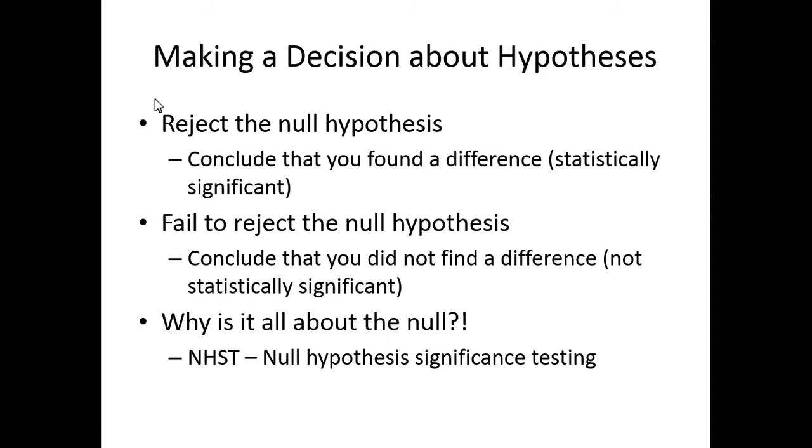Now with these hypotheses, sometimes you might predict a direction. I expect this group to be larger than this other group. But we're going to do that more later. Right now I just want you to get the idea that there's one that says nothing happened and one that says something happened. If I'm trying to make a decision, I have my two hypotheses. There's two options. I can reject the null and conclude that I found a difference. This is when somebody says it's statistically significant. So I'm rejecting the null to show that this is true. Or I can fail to reject the null, it's not statistically significant. We never actually test the research hypothesis, nor do we ever prove it.